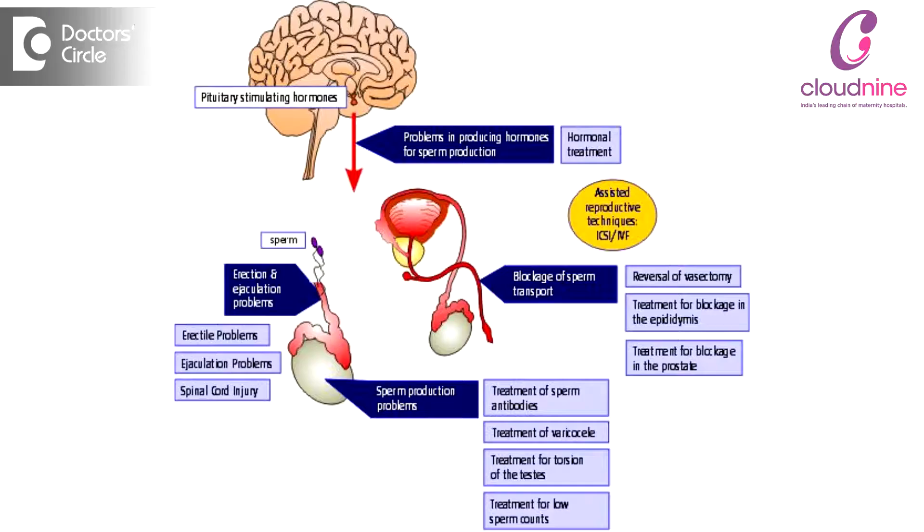As far as a male partner is concerned, there are two kinds of abnormalities which can happen. There is something called azoospermia, where there is complete absence of sperms in the ejaculate, and there is oligoasthenoteratospermia, where the sperm count and motility are on the lesser side.